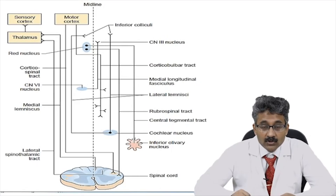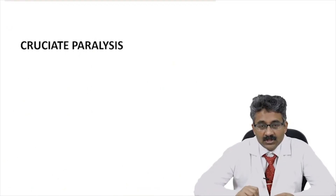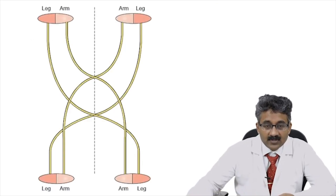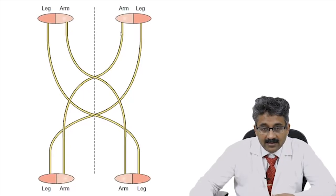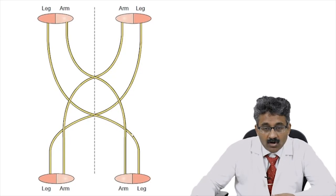One more interesting topic: whenever there is a lesion at the foramen magnum or medulla, there is something called cruciate paralysis. In the lower part of the medulla, the arm fibers decussate at a higher level to the opposite side via the corticospinal tract, while the leg fibers decussate at a lower level. So if a lesion occurs at that point, the arm fibers have already decussated — giving ipsilateral arm weakness — whereas the leg fibers will cross later, giving contralateral leg weakness. This is cruciate paralysis, also known as hemiplegia alternans or crossed hemiplegia.